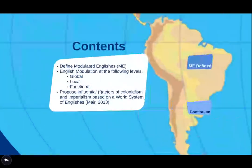The things we're going to cover today are: we're going to define Modulated Englishes, look at English modulation on the global, local, and functional levels, and then look at a proposal for influential factors and actors of colonialism and imperialism based on a world system of Englishes from Mayer, 2013.